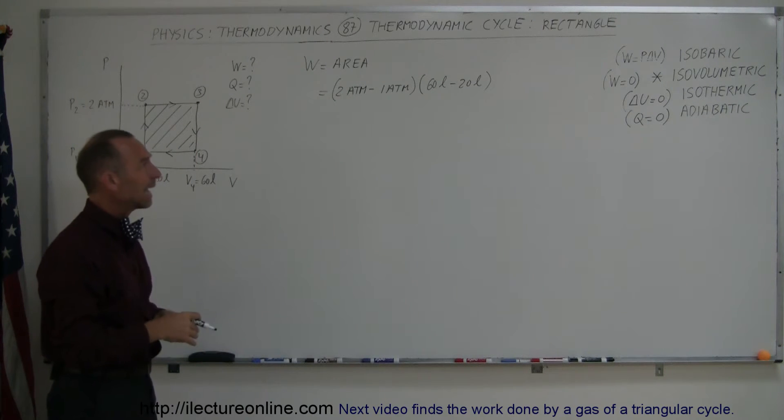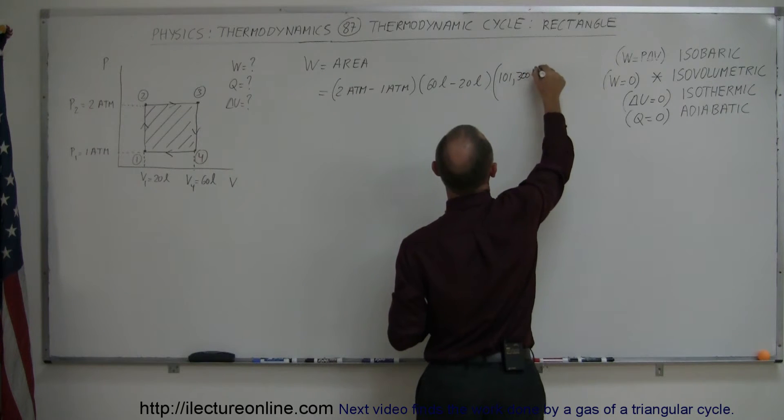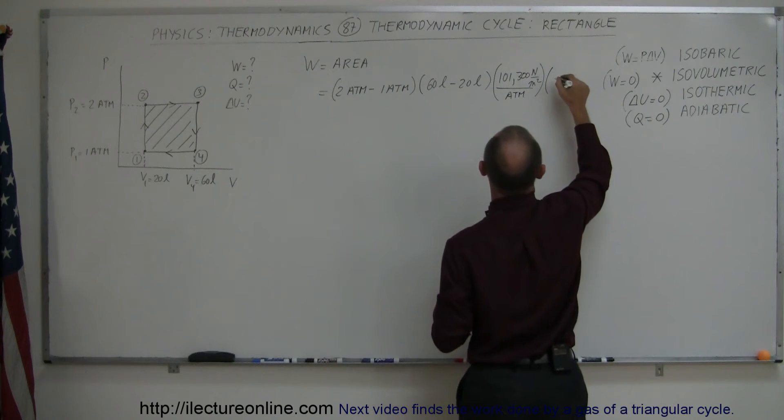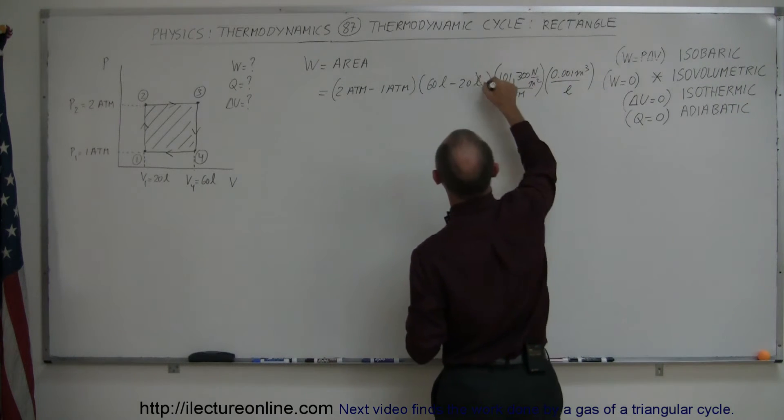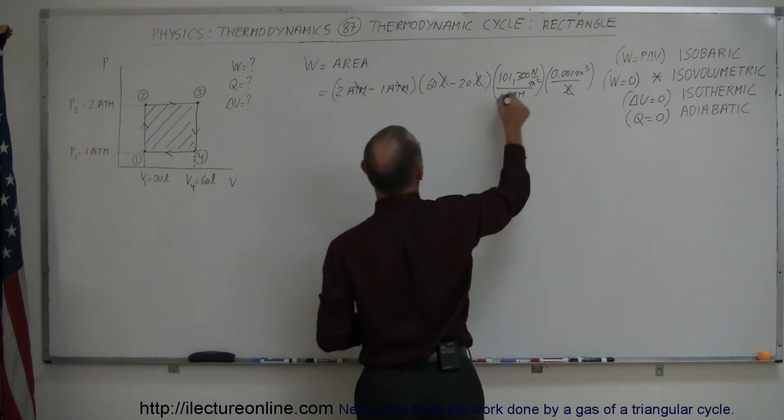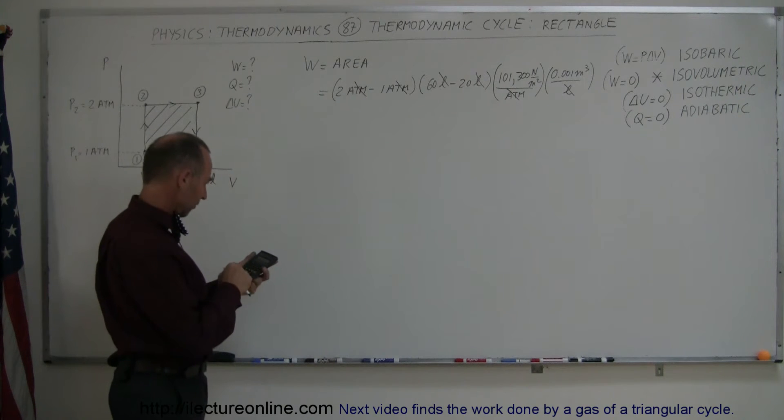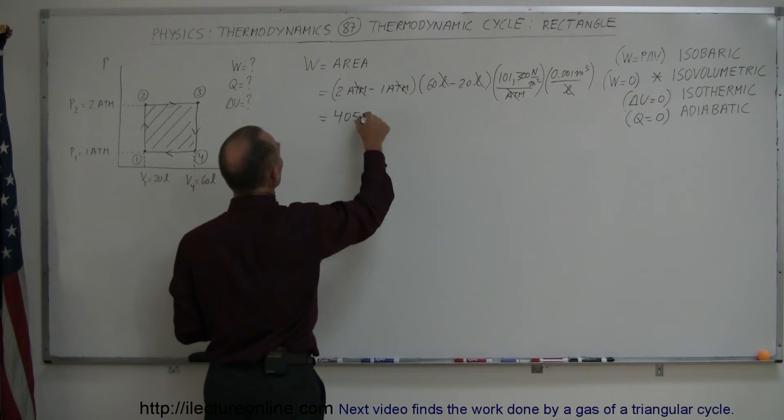We want to convert that to Pascals and cubic meters. So here we have to have 101,300 newtons per square meter divided by atmospheres to convert that. And we have to multiply that times 0.001 meters cubed divided by liters. And so then the liters cancel out and the atmospheres cancel out and we have proper units. So let's calculate that. We have 40 times 101,300 divided by 1,000 equals, and that's 4,052 joules.